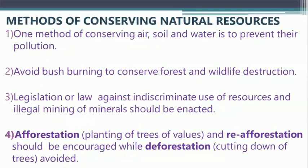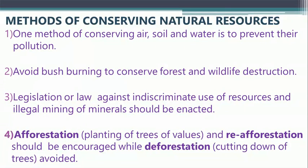Let's look at the methods of conserving natural resources. Number one: to conserve air, water, and soil, we should avoid or prevent their pollution — water pollution, soil pollution, and air pollution should all be avoided. Number two: avoid bush burning. When you burn bush, you tend to burn the plants, animals can die or flee, and some rare or very valuable organisms are destroyed in the process.